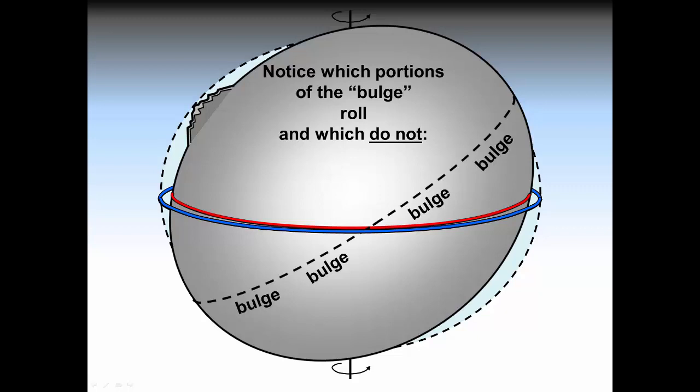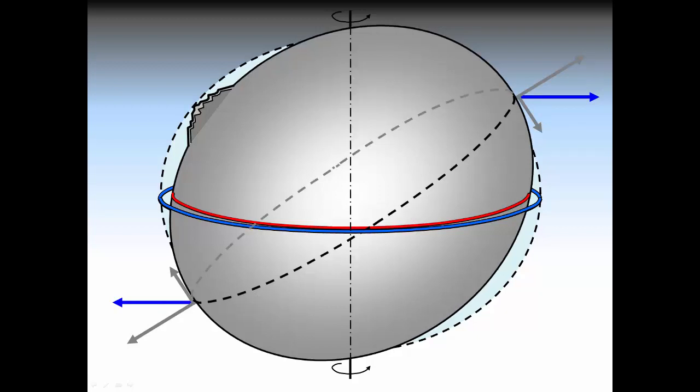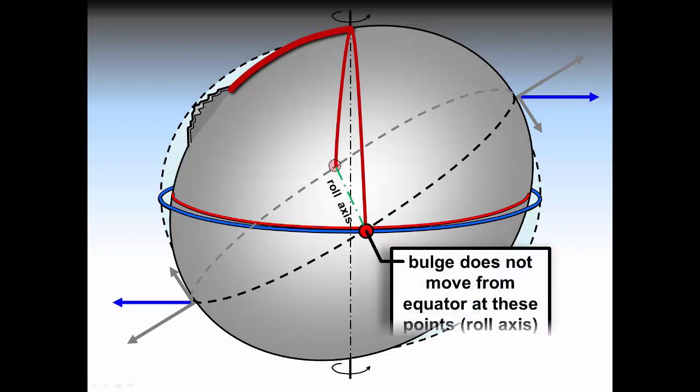As can be seen, the bulge tips a great deal more the further away it was from the roll axis. It is at these points that the centrifugal force on the bulge was the greatest. Remember that the greatest mass concentration on the surface was the Himalayas on the largest continent Asia. Following the same methodology, we can determine the roll axis location.